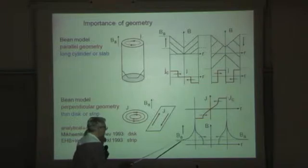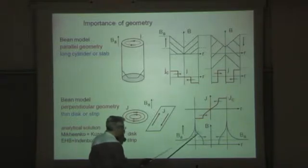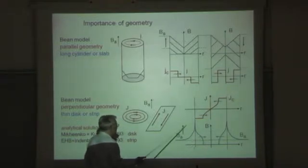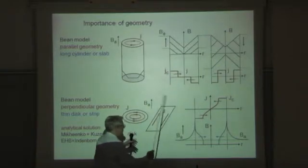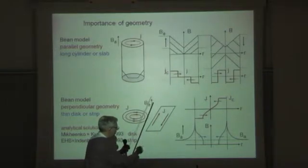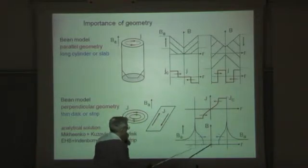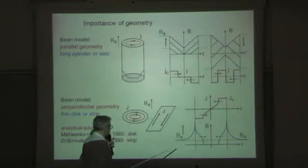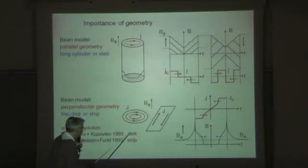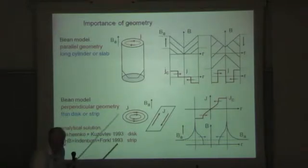But the magnetic field is known analytically only for the strip, but not for the disc. For the disc, you take this current, and then just by Biot-Savart law, by one integration, you get also the magnetic field. And it looks almost the same as for the strip, but there is no analytic solution for the magnetic field in a disc in this Bean model.